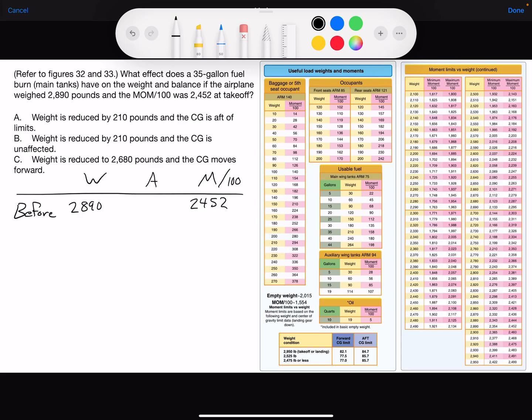Looking at the tables on the right, I can see that for our given weight of 2,890, which is right here, we have a minimum moment and a maximum moment. The minimum is the forward center of gravity limit, max is the aft center of gravity limit, and our moment of 2,452 hundreds is right here at the maximum.